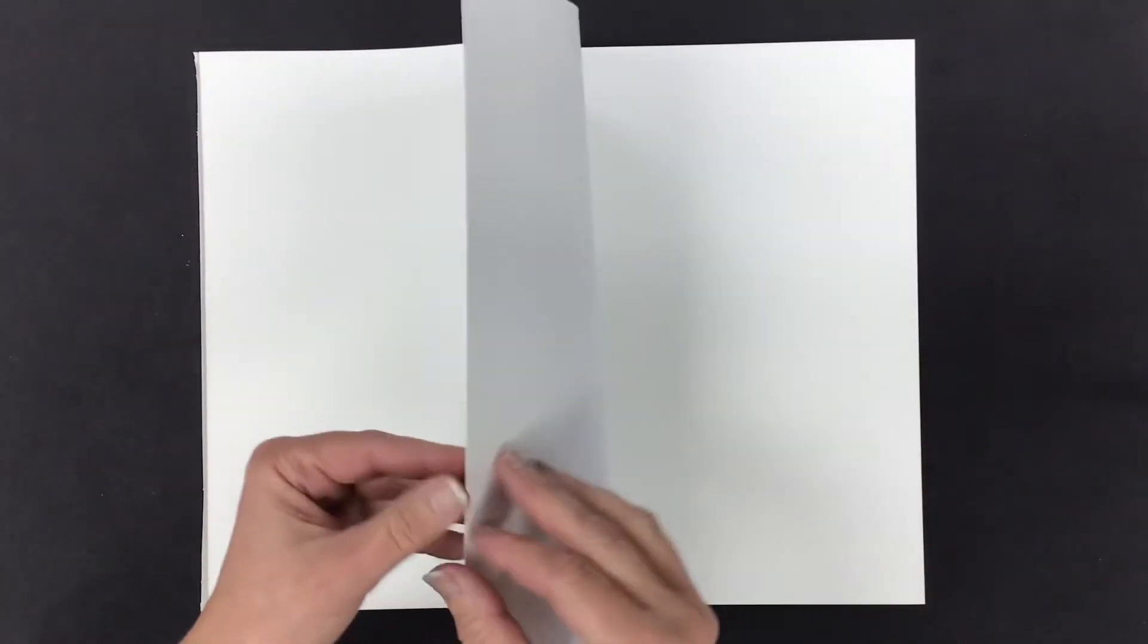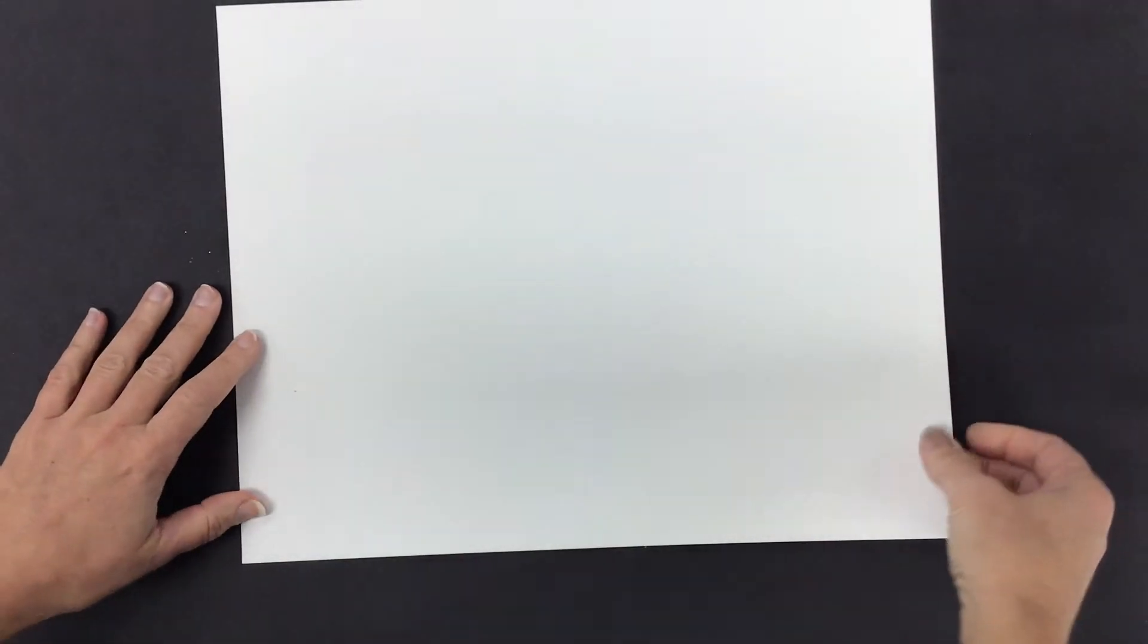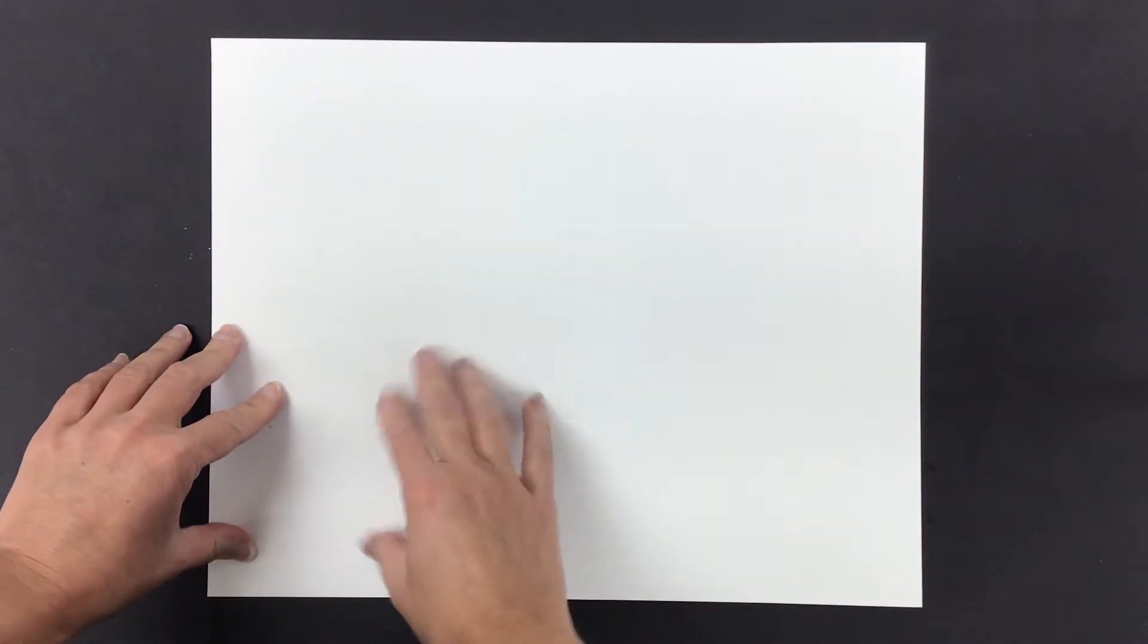I'm going to take my paper and position it in front of me in the landscape position so it is actually going across ways like this. If it were going up and down that'd be called portrait.